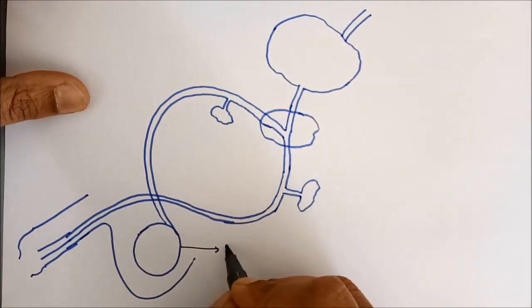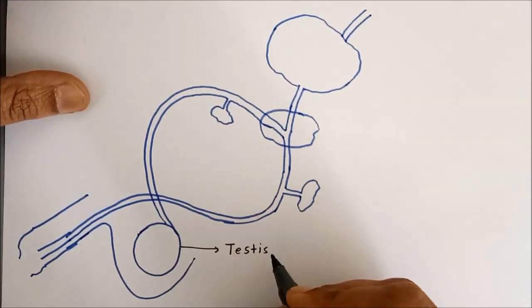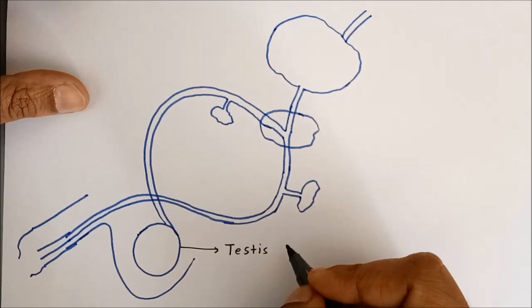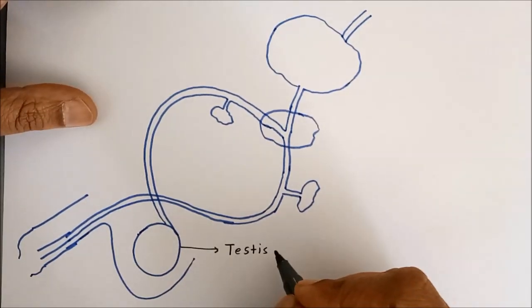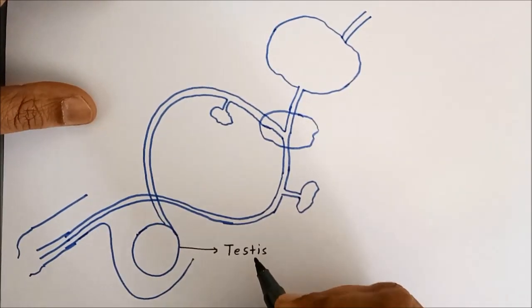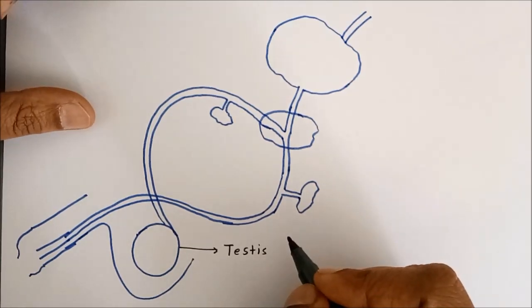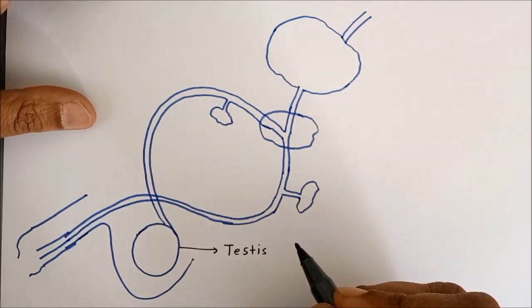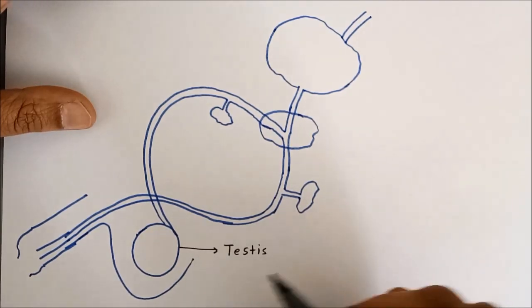This is called testes. Testes is an endocrine gland that also produces testosterone hormone, which is responsible for the development of the secondary sexual characteristics like deepening of the voice, then underarm hair.